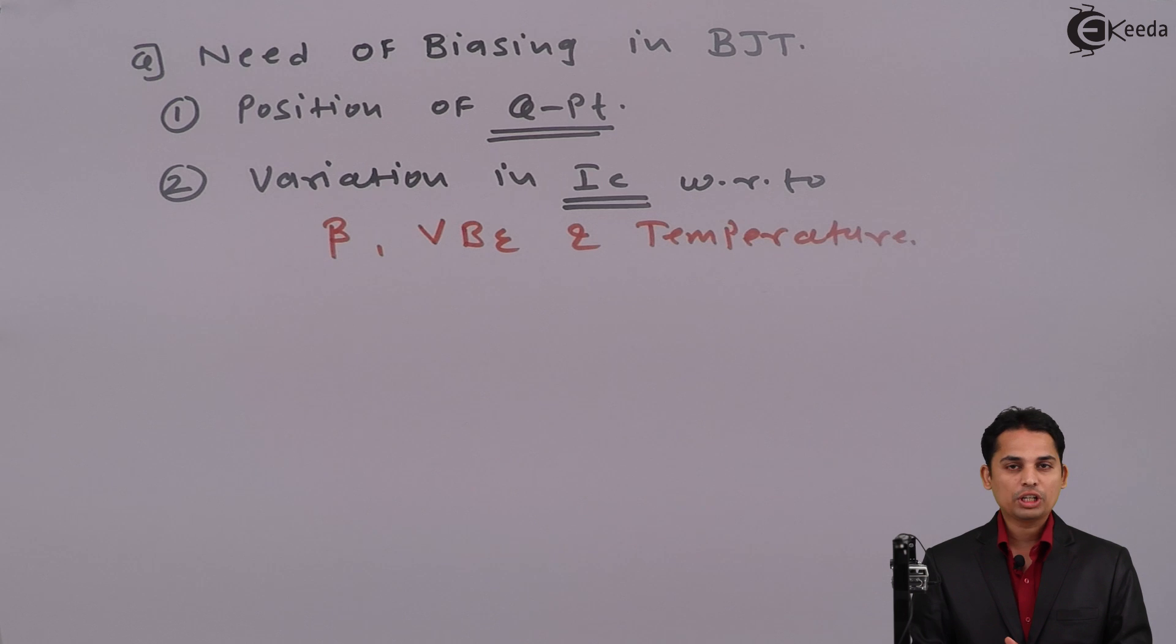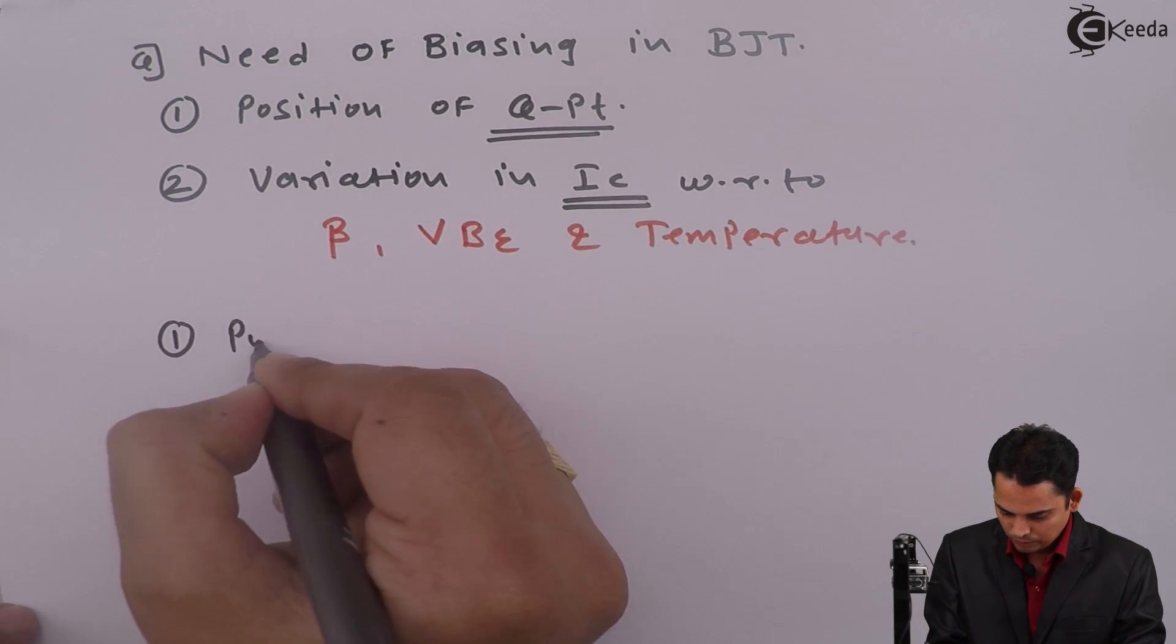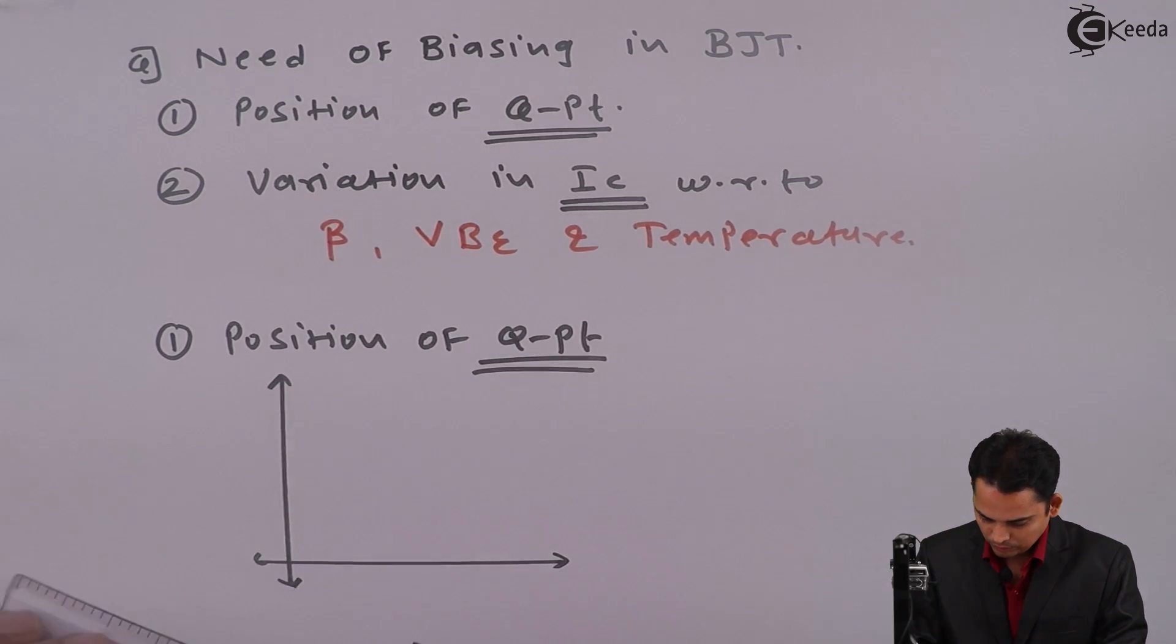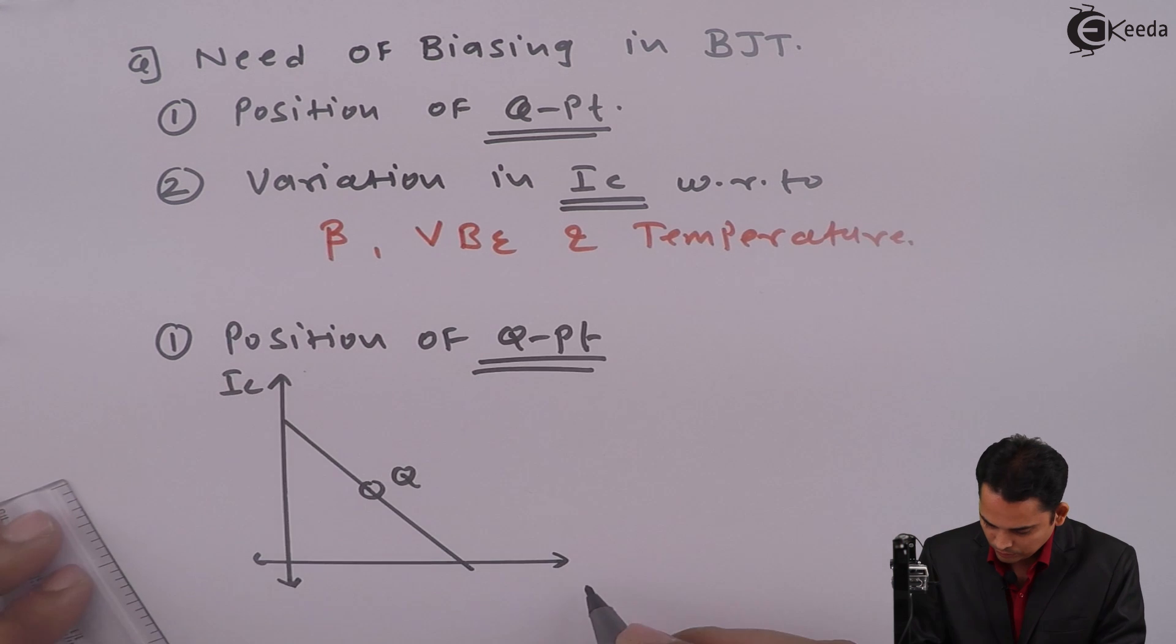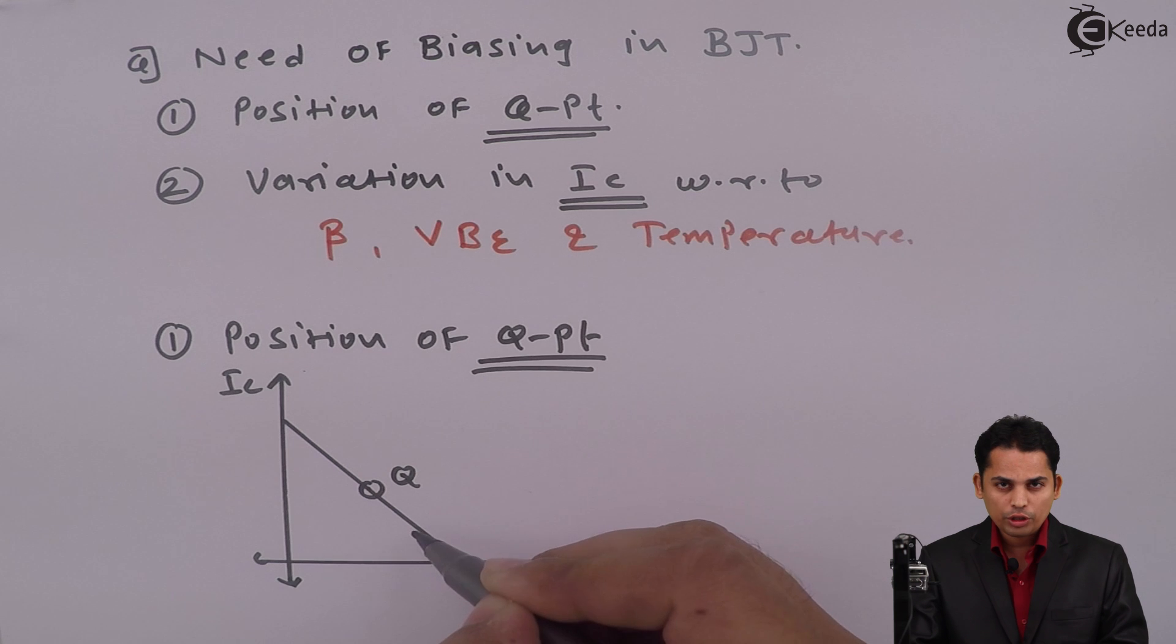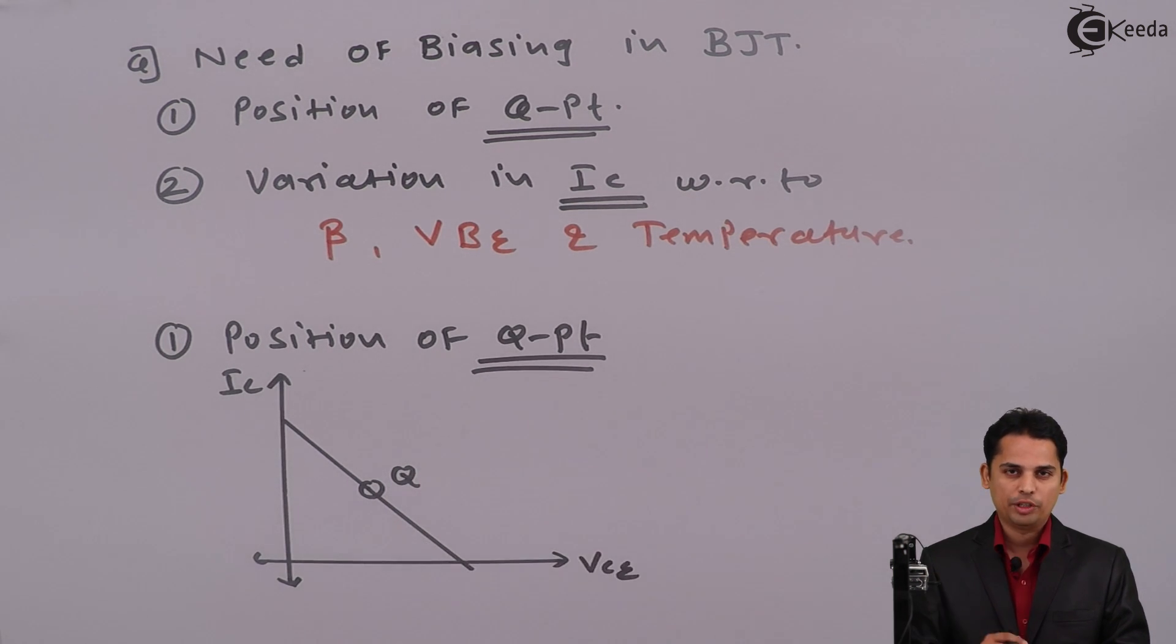Let us start with first point, position of Q point. Normally what we do is we select Q point exactly at the middle of the load line as shown in the figure. Now, if we select Q point above this or below this, then there can be clipping. That means the output waveform is not exactly identical. To get output exactly identical in positive half and negative half, we want Q point to be at the center of the load line. And this is the first reason why we are going for biasing of BJT.